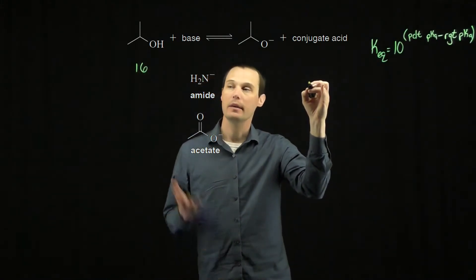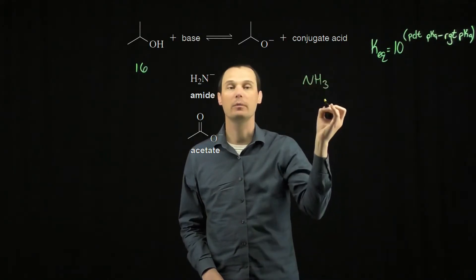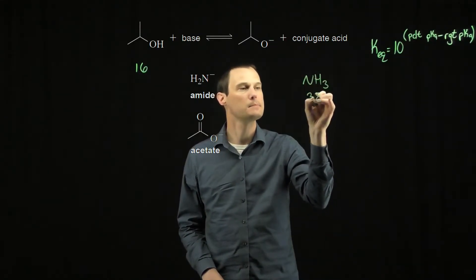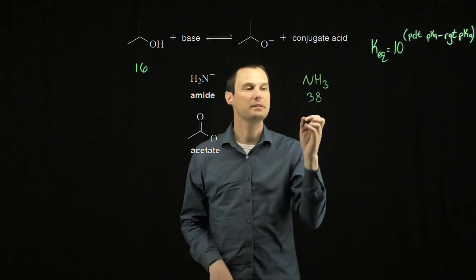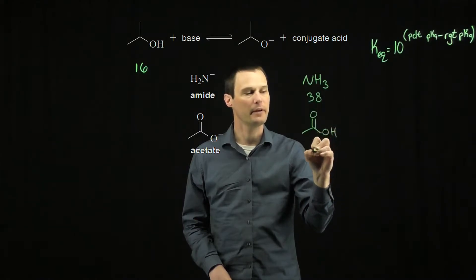Let's draw those in as well. The conjugate acid of amide is ammonia with a pKa of around 38. And the conjugate acid of acetate is acetic acid, which is a carboxylic acid with a pKa of around 5.